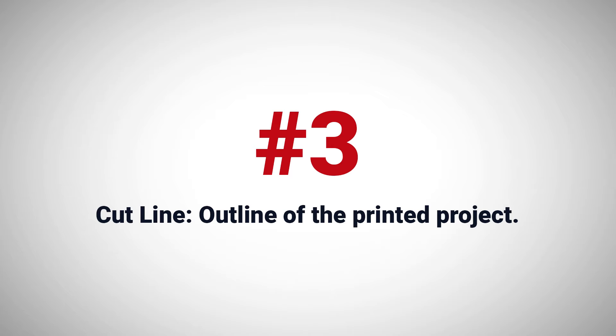Another important term — which I've actually already used in this video — is a cut line, which is also often referred to as a die line. This is the actual outline of whatever object you're having printed. In the case of product packaging, usually this will be an outline of a foldable box or insert. The cut line acts as an anchor for both your bleed and your safety, and will need to be clearly indicated to your printer if they are not providing a template for your project.